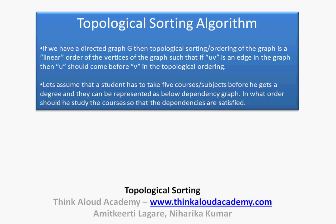Topological sorting algorithm is basically used on a directed graph. If we have a directed graph, then topological sorting or topological ordering of the graph is a linear order of the vertices such that if uv is an edge in the graph, then u should come before v in the topological ordering.